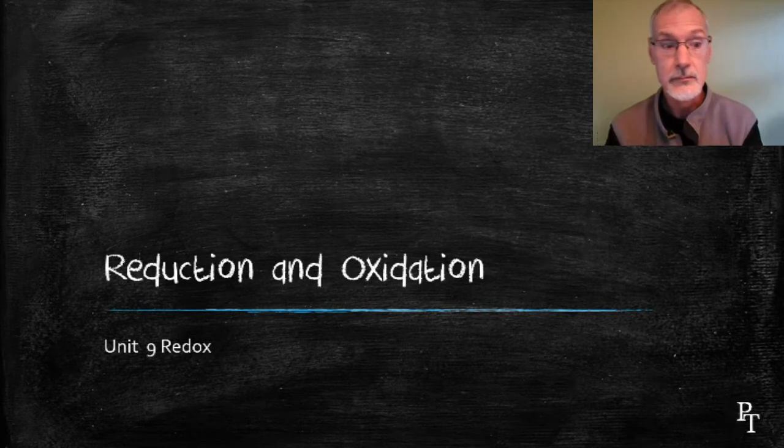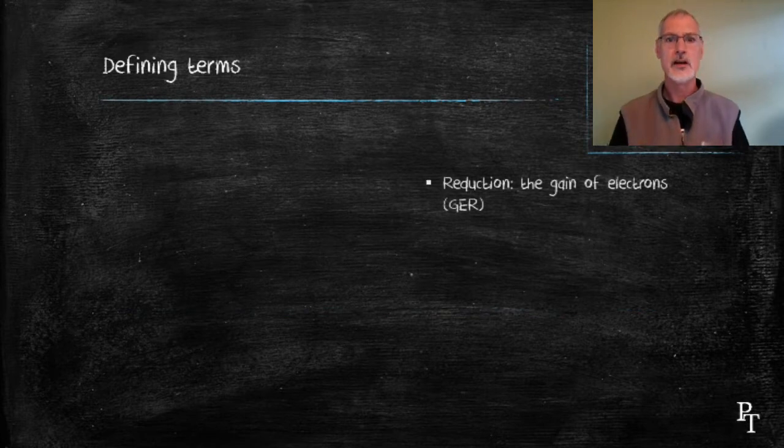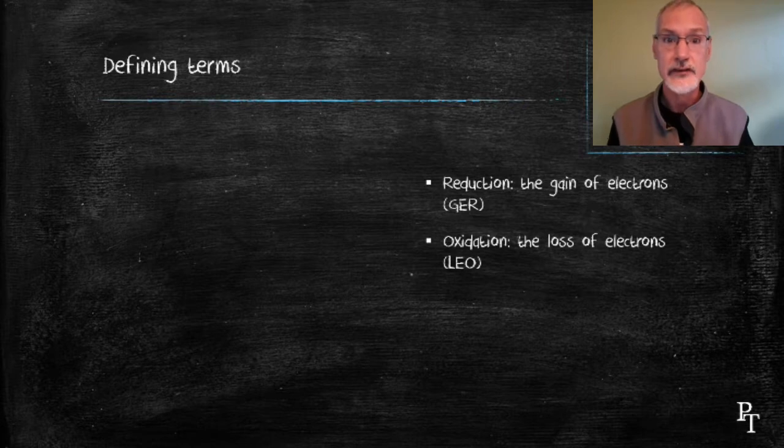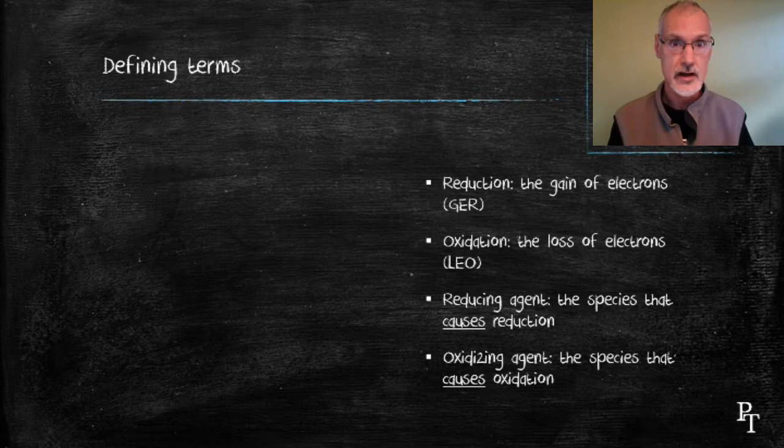This video looks at oxidation and reduction. We'll examine several key terms used frequently in this unit: reduction, the gain of electrons; oxidation, the loss of electrons; and related terms dealing with the agents that cause these processes.